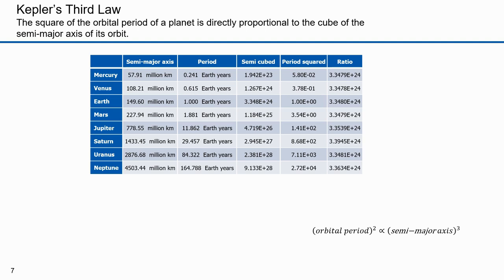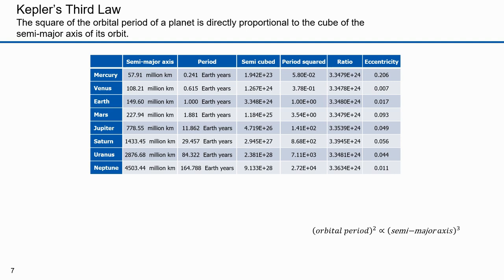Kepler's third law was the most accurate prediction in his day — a vast improvement over the Ptolemaic system, but it wasn't perfect. Suffice it to say that the square of the periods of each of the planets is proportional to the cube of the semi-major axis with the same constant of proportionality. The eccentricities vary from planet to planet; Mercury has the most eccentric orbit and many others are nearly circular. Eccentricity has no bearing on Kepler's third law. The period of an orbit is solely a function of the semi-major axis, not the eccentricity or the shape of the ellipse.